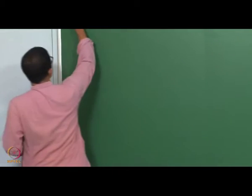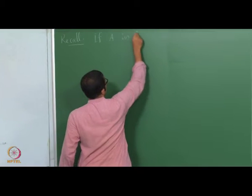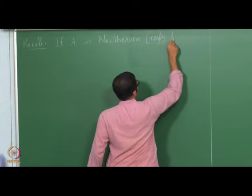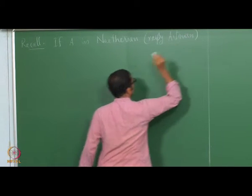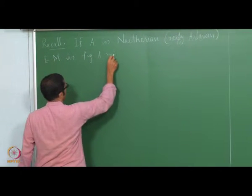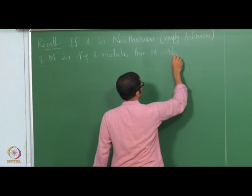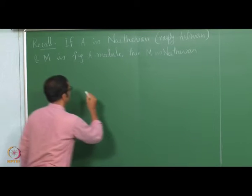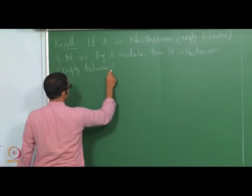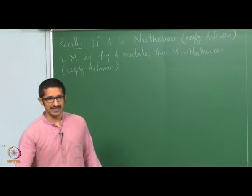Let us recall that if A is Noetherian (respectively Artinian) and M is a finitely generated A-module, then M is Noetherian (respectively Artinian). This follows directly from the onto homomorphism from A into M.